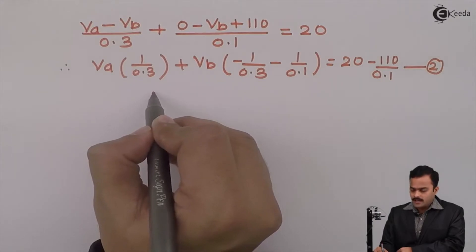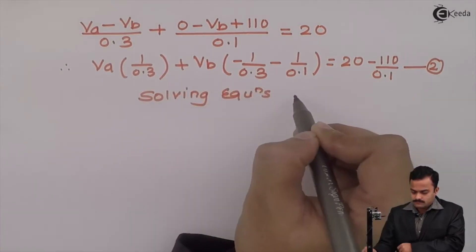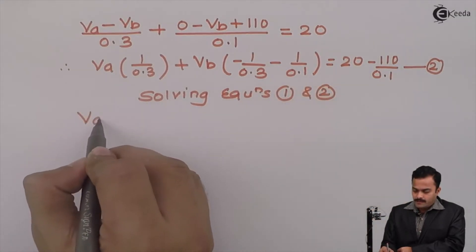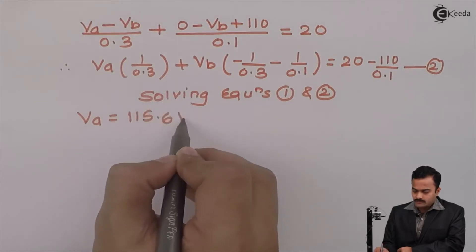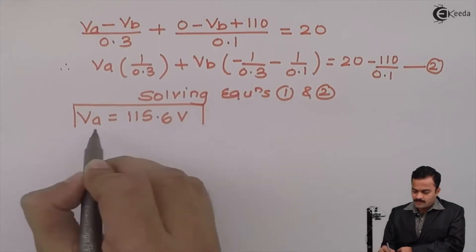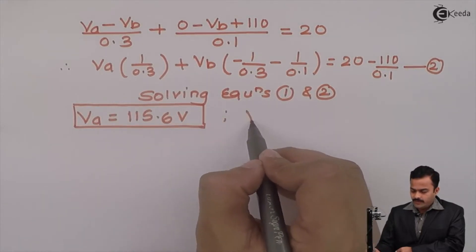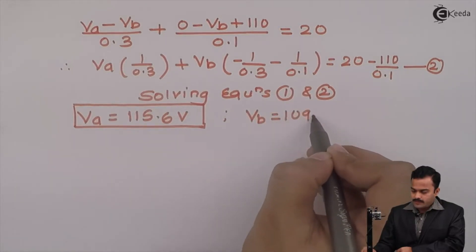Now, solving equations 1 and 2, I will get Va equal to 115.6V. It's the first outcome. And Vb, I will get 109.9V.